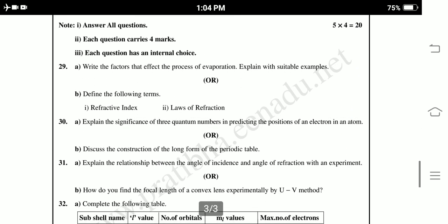Section four, answer all questions. Each question carries four marks. Each question has internal choice. So there are 5 questions, either A or B, 5 into 4 marks, so 5 into 4, 20. Twenty nine, write the factors that affect the process of evaporation. Explain with suitable examples. B, define the following terms: refractive index, laws of refraction.